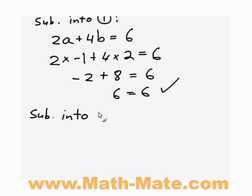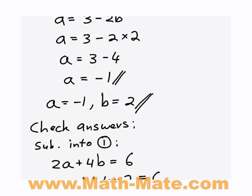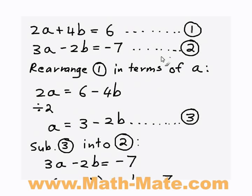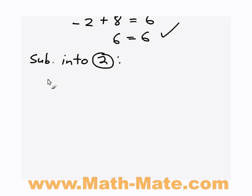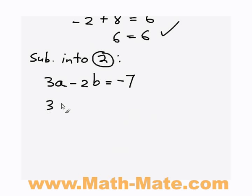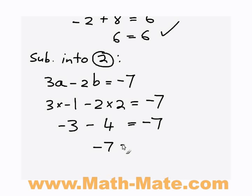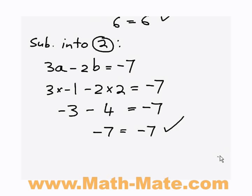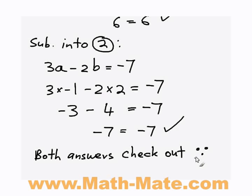Next thing to do is to check them with equation 2. Equation 2 is 3a minus 2b equals minus 7. So I'll write that back down. 3a minus 2b equals minus 7. So once again, instead of a and b, we're going to write the values we worked out, which is a equals negative 1 and b equals 2. So 3 times negative 1 minus 2 times 2 equals minus 7. Once again, we're checking whether this equation is going to be true. So we get negative 3 minus 4 equals minus 7. Negative 3 minus 4 is just minus 7, so we get minus 7 equals minus 7. Notice that I'm using minus or negative. Both words mean the same thing pretty much. So both answers check out in both the original equations. So we've got the right answer. Yay!